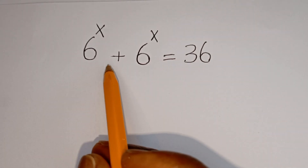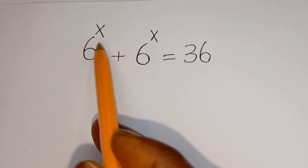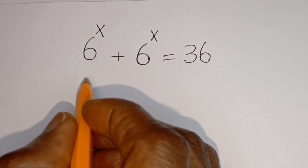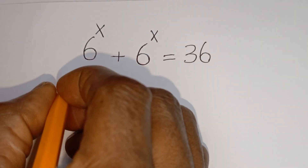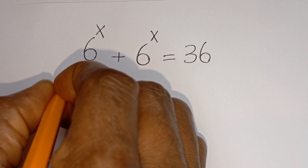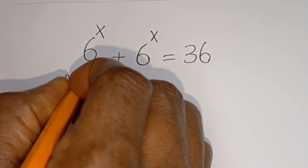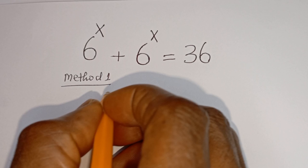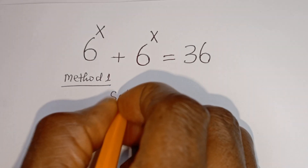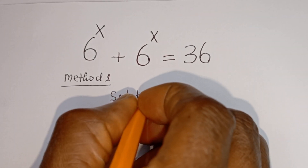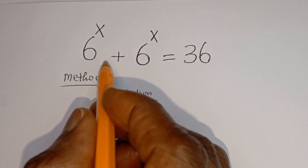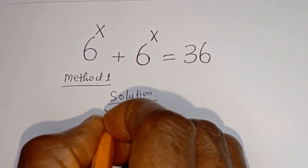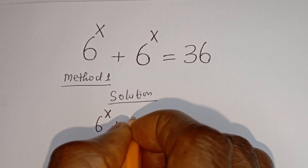Hello! How to solve for x in this equation: 6 to the power of x plus 6 to the power of x is equal to 36. We are going to use two methods to solve this problem. Let's consider the first method, called Method One.